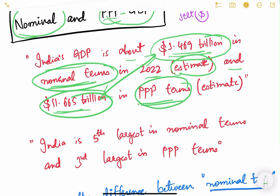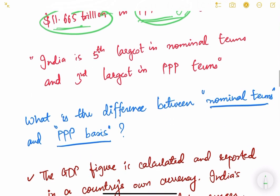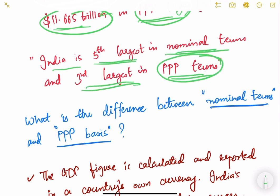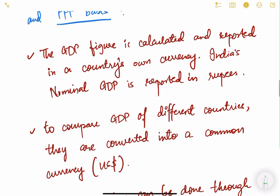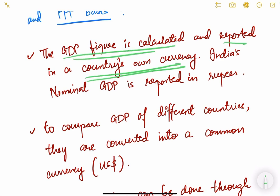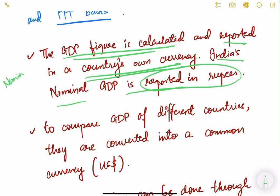India is the fifth largest economy in nominal terms but the third largest in PPP terms. GDP figures are first reported in a country's local currency. Nominal GDP is the GDP adjusted for price (giving real GDP), reported in rupees. To compare GDPs across countries, we must convert them into a common currency — usually the US dollar.